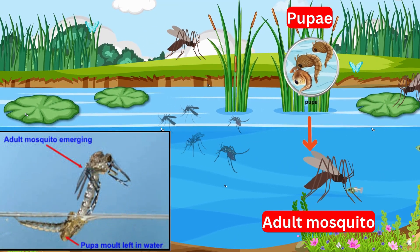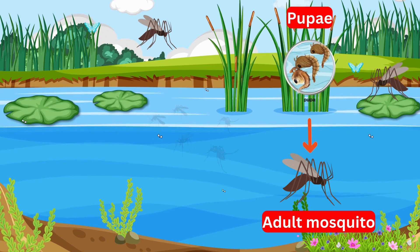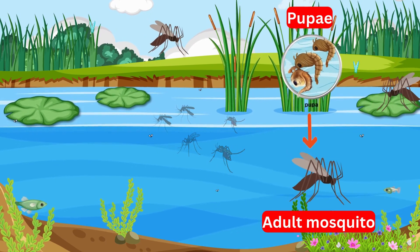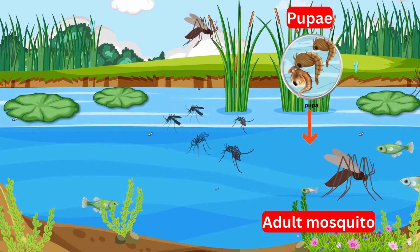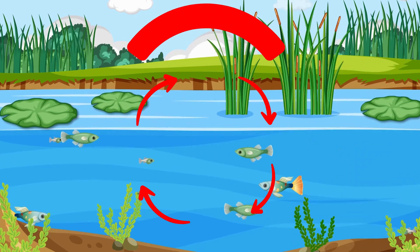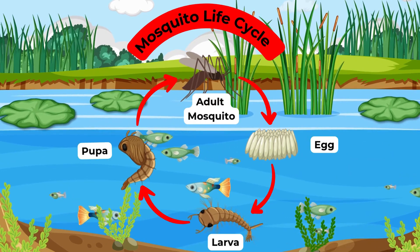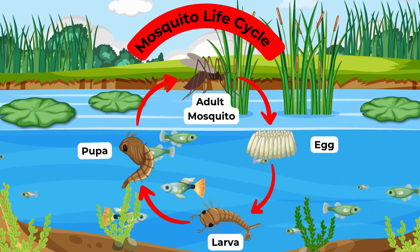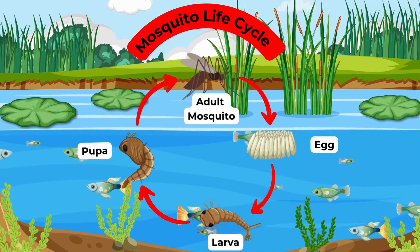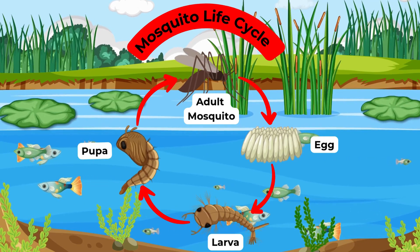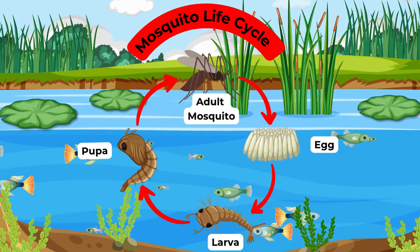Wow, kids! We've learned so much about mosquitoes and their amazing life cycle. Let's quickly review what we discovered. Mosquitoes start as tiny eggs on water. Then they hatch into wriggly larvae that swim around and grow. Next, they turn into pupae, where they rest and get ready for their big transformation.